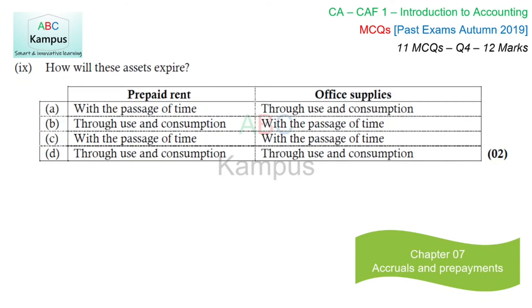How will these assets expire? Prepaid rent is time-based — whether you are doing any activity or not, as time passes, the rent becomes due. So for rent: with the passage of time. Office supplies refer to items like paper reams, staplers, pens, and ink used in the office. These expire as you use them — they do not expire based on time. If you are printing a lot, office supplies will be consumed quickly; if you are not using them, the asset will not reduce. So office supplies expire through use and consumption. The option where both are correctly described is option A.